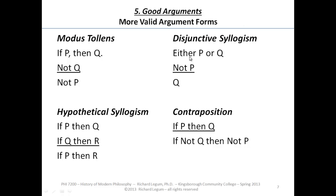The final if-then below modus tollens is called hypothetical syllogism. The word syllogism refers to a certain kind of inference — two premises and a conclusion. Hypothetical, because it's an if-then, sometimes called a conditional. The inference goes: Premise one, if P then Q. Premise two, if Q then R. Therefore, if P then R.